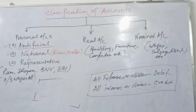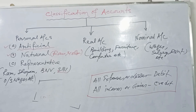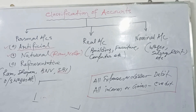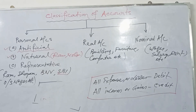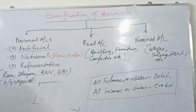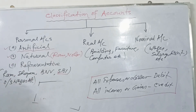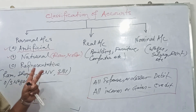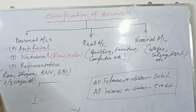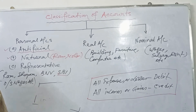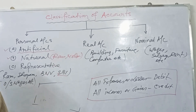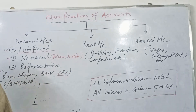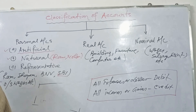Let us take an example of how to identify the type of account and apply the golden rules of debit and credit. Transaction: goods purchased for cash. Two accounts are opened — purchase account and cash account. Purchase account is an expense, known as nominal account, so it is debited. Cash is a real account; it goes out, so it is credited.